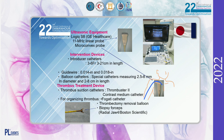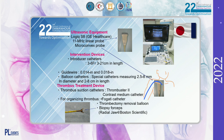For thrombus processing, thrombectomy aspiration catheters or contrast catheters were used as suction devices. Additionally, a Fogarty catheter, organizing thrombectomy balloon, and biopsy forceps were used for organizing thrombus, according to vessel caliber and thrombotic properties. The biopsy forceps used are radial graspers made by Boston Scientific.